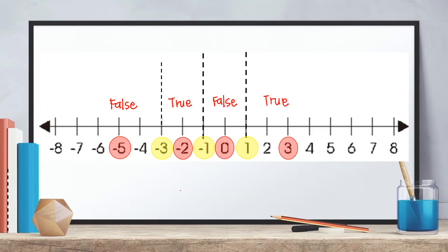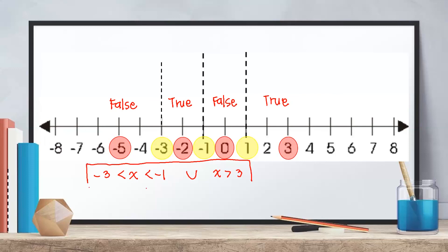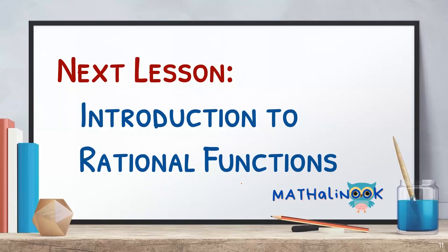Therefore, our solution set for the rational inequality is: −3 < x < −1 union with x > 1. This interval represents the numbers between −3 and −1, and the numbers greater than 1. This is our final answer. I hope that you understood the lesson. In the next video, we will discuss the introduction of rational functions. Thank you so much and see you in the next discussion.